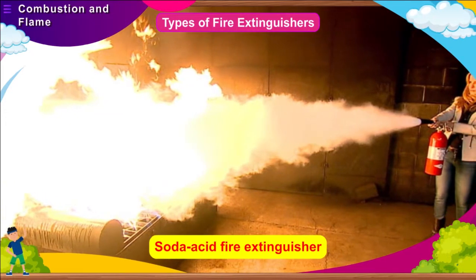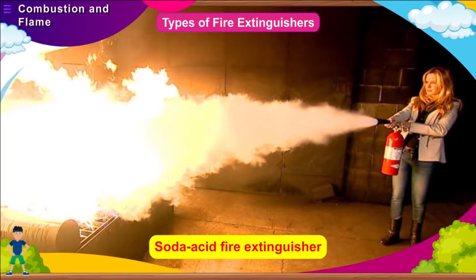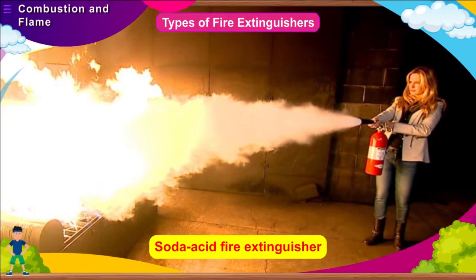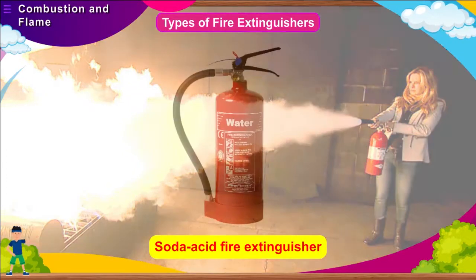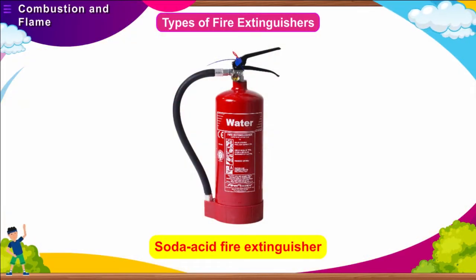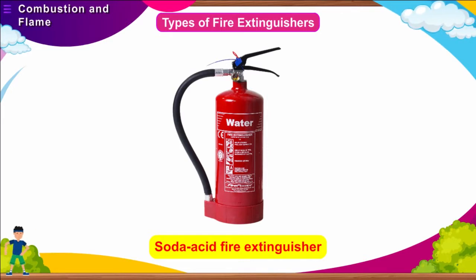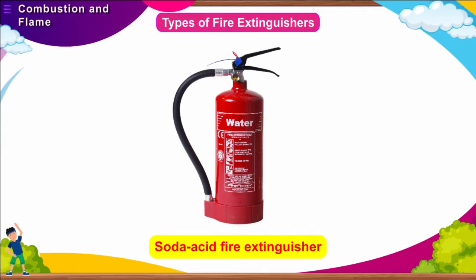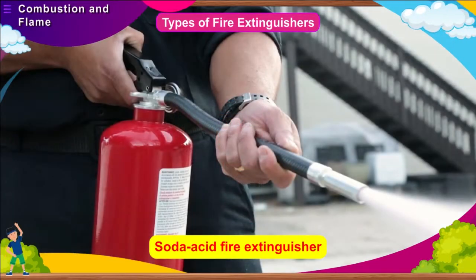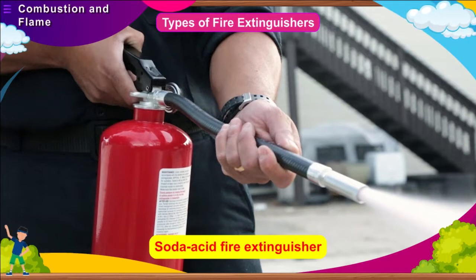The soda acid fire extinguisher is based on the principle of extinguishing fire by cooling the burning substances below their ignition temperature and by cutting off the supply of air. It consists of a metallic cylinder with a knob and a nozzle tube. The cylinder is filled with a saturated solution of sodium bicarbonate (NaHCO3). A glass bottle containing concentrated sulfuric acid is kept inside the metal cylinder, as shown in the figure. When we strike the knob of the extinguisher, it forces the water solution out through the nozzle. The mixture of liquid and carbon dioxide extinguishes the fire.